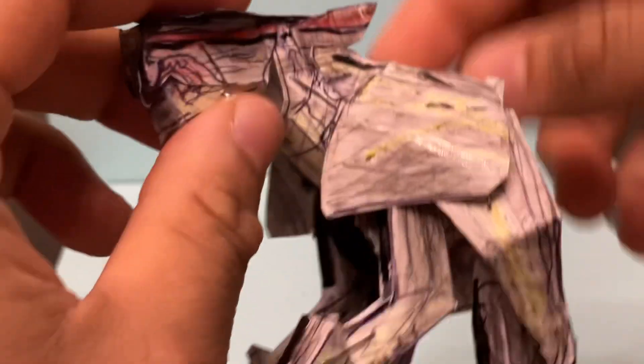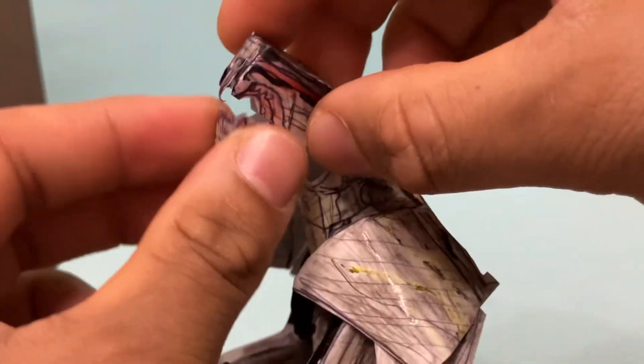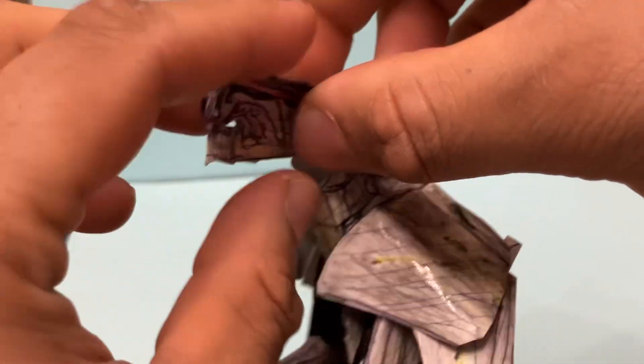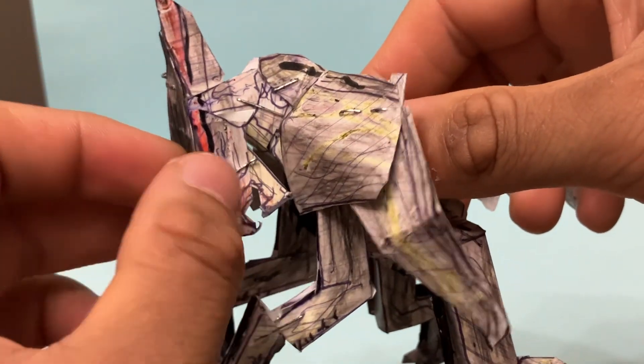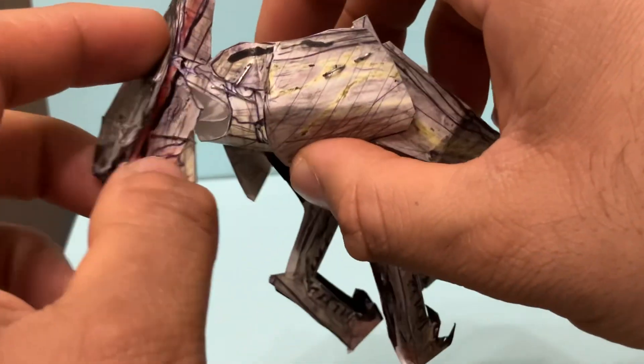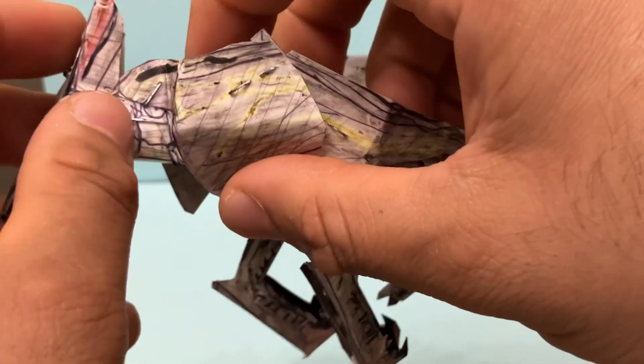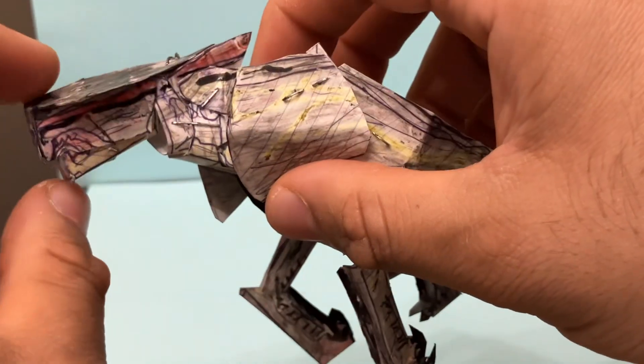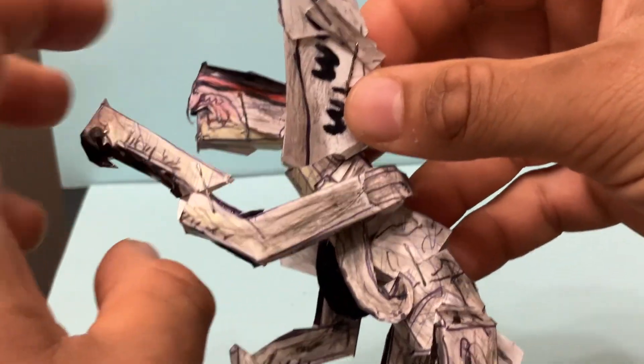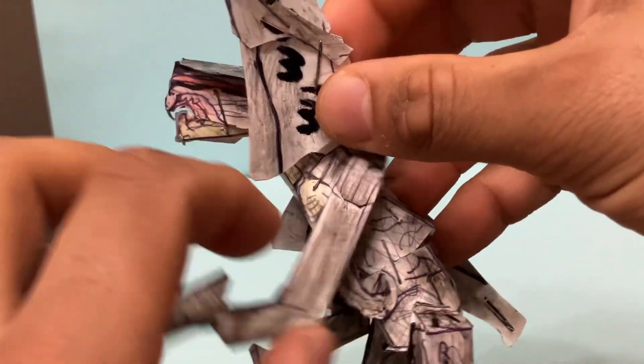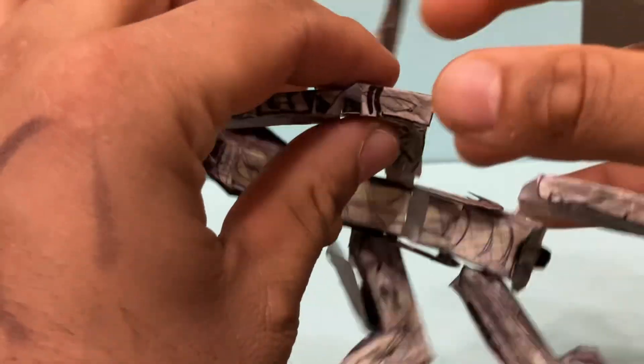Articulation, yes, this figure is articulated. You can move the jaw up and down. The head can go up and down, go all the way down like that, and then it can go a little bit up.